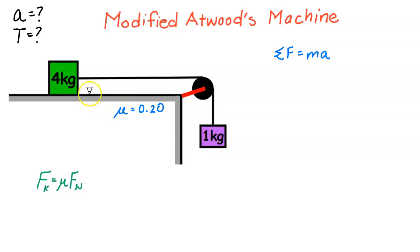There's also friction on this table between the table and the block with a coefficient of friction of 0.20. And this is the equation that we're going to start off with: net force equals ma.